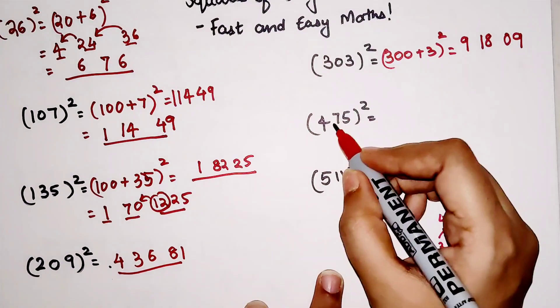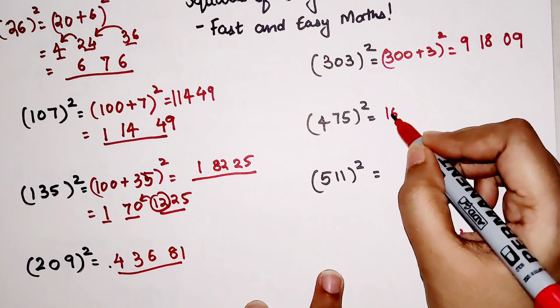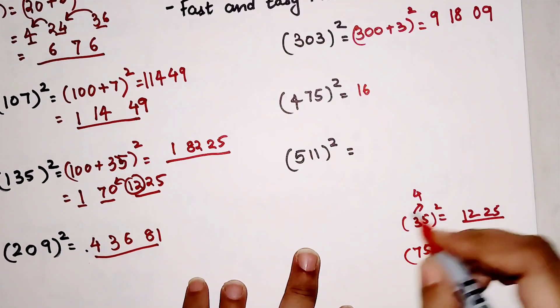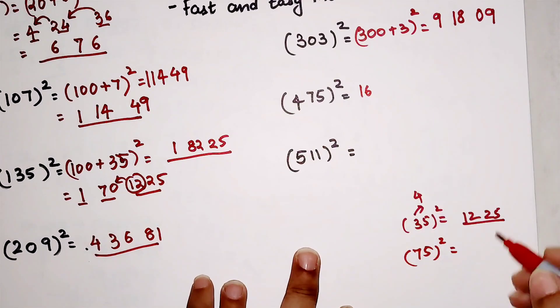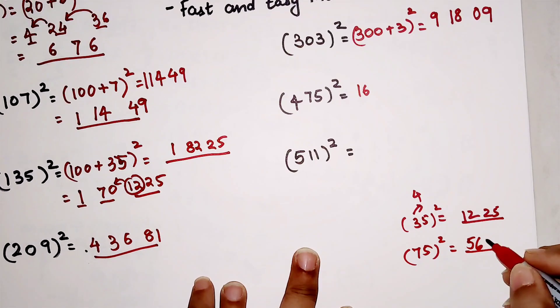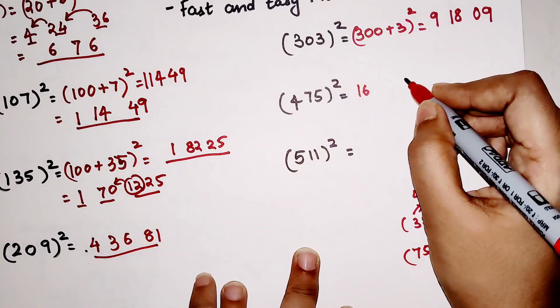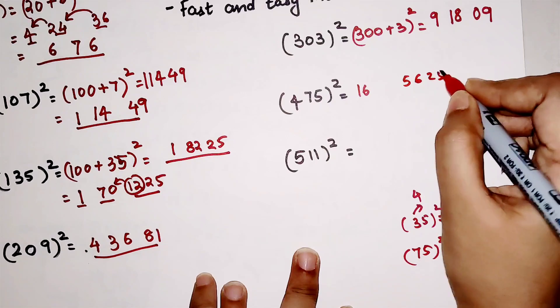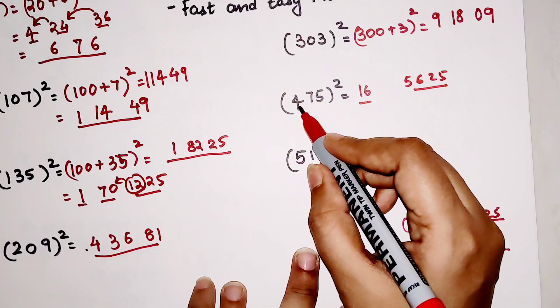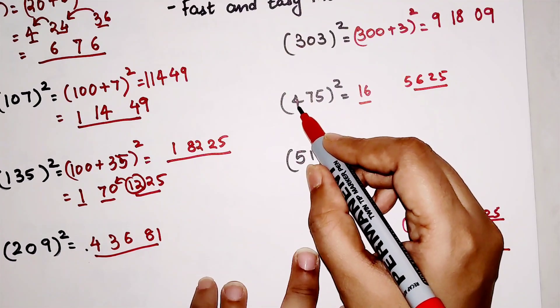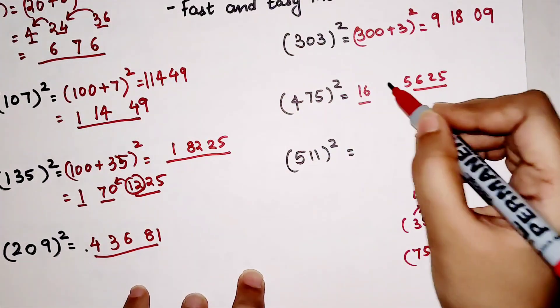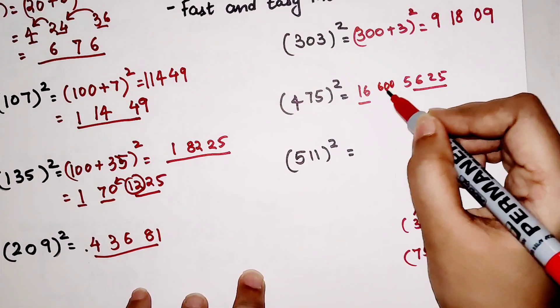So now for 475². Let's write this. Square of 4 is 16. Square of 75—let's write it over here. See, I can write it orally also, but for you all to understand or get the hang of it, I am doing it over here. So 7 into 8 is 56, and then square of 5 which is 25. So we have 5,625. This is the third part of your answer. And then 75 into 4 gets you 300, 300 into 2 gets you 600. So this is your middle part.